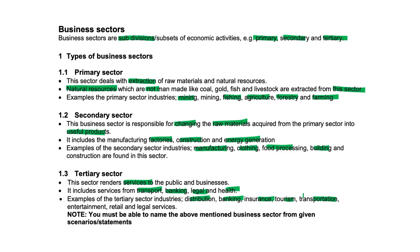It's almost as though the tertiary sector is the final end product. You must be able to name the above-mentioned business sectors from given scenarios and statements. So to recap: primary sector is natural resources, secondary sector is all about manufacturing, and the tertiary sector is the service or final product to the public. Remember how to name all three, what they do, what they're about and the services that they offer.